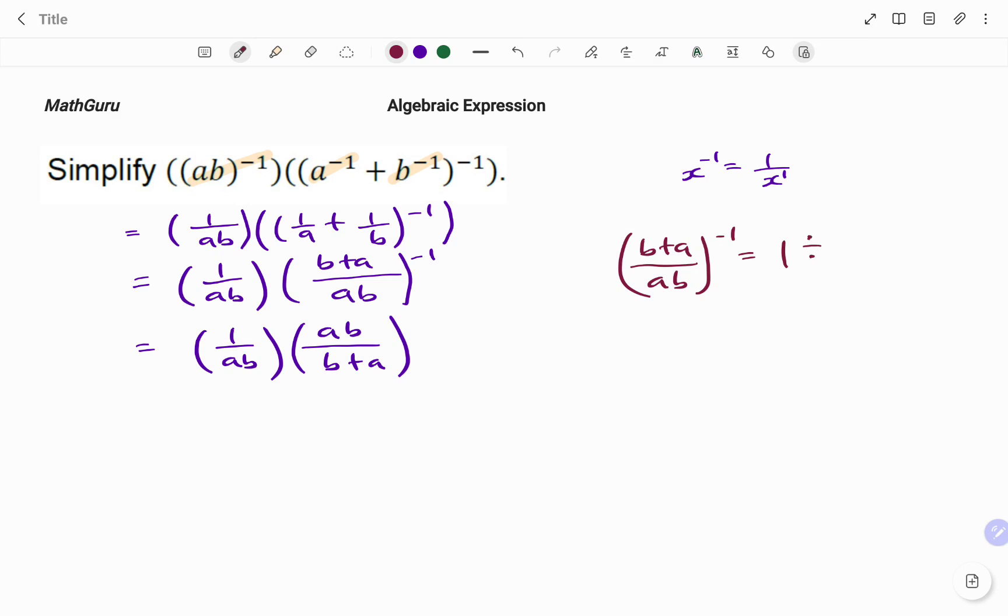Because I'm taking it to the bottom, I have one over b plus a over ab, or I'm writing it as one divided by b plus a over ab, close bracket. And applying the fraction law, that will be one times, I'm going to flip my right hand side...